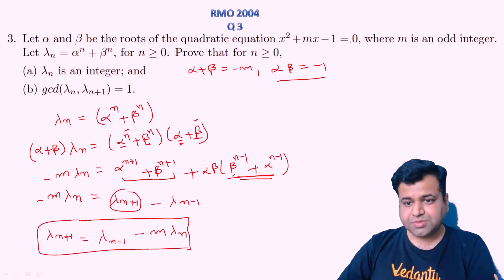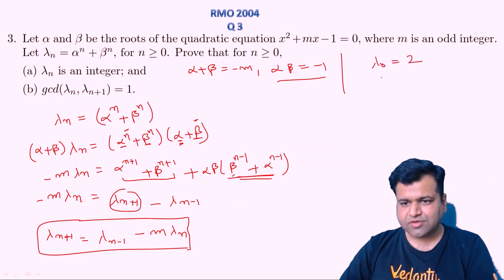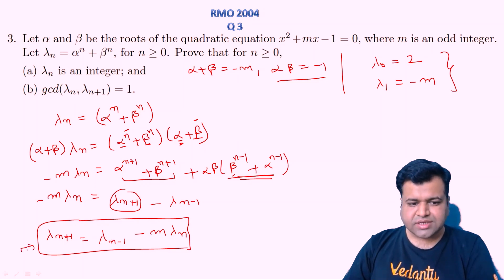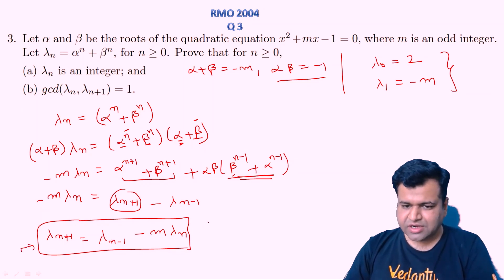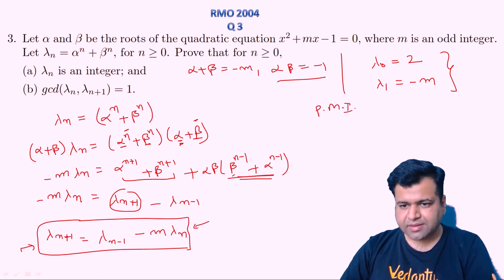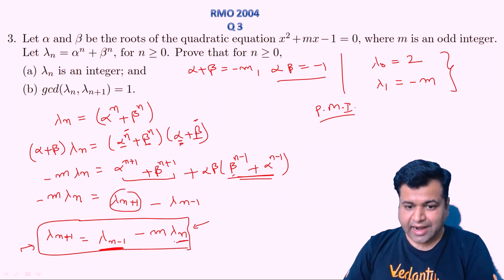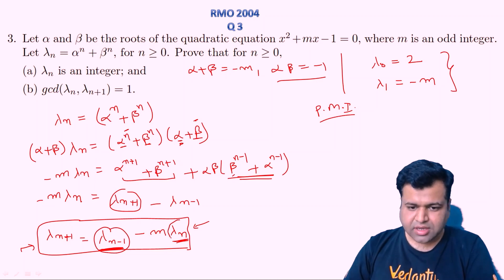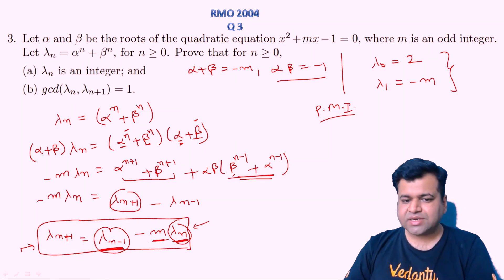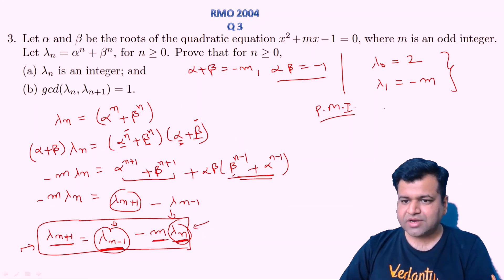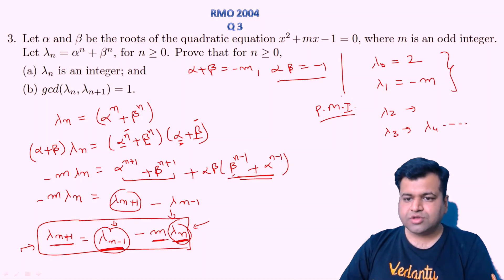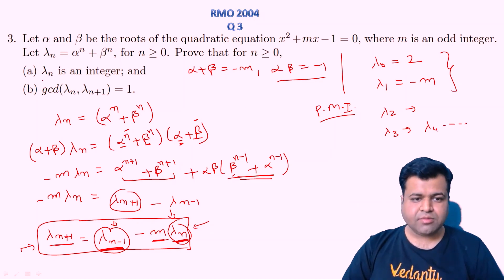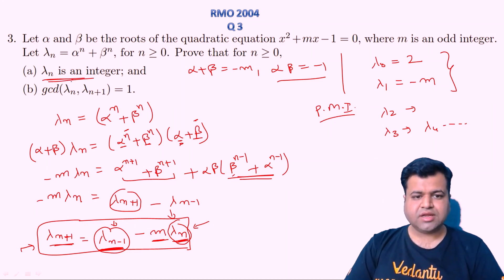This is the recursive relation we have obtained. We've shown that λ₀ = 2 is an integer and λ₁ = -M is an integer. Using the principle of mathematical induction: if λₙ₋₁ is an integer and λₙ is an integer, then since integer minus integer is integer, λₙ₊₁ = λₙ₋₁ - M·λₙ must also be an integer. So λ₂ is an integer, λ₃ must be an integer, λ₄ must be an integer, and so on. Using the principle of mathematical induction, we can claim that λₙ is an integer for all n ≥ 0. That is basically the first part of the question.